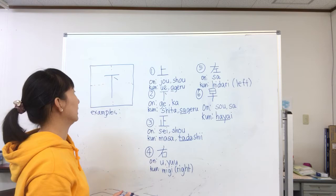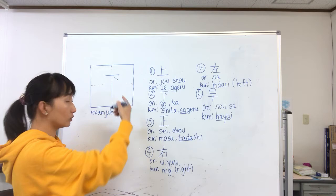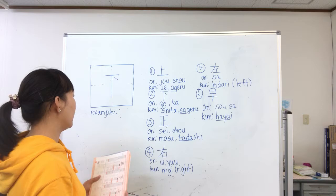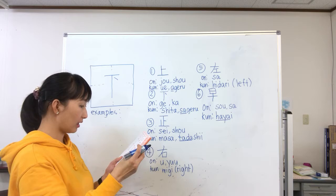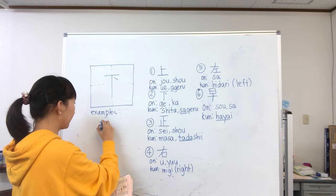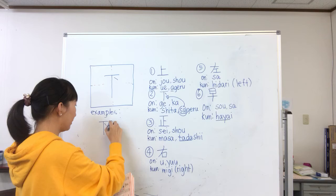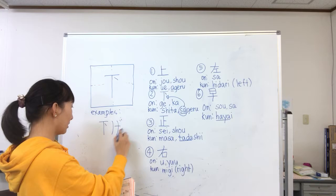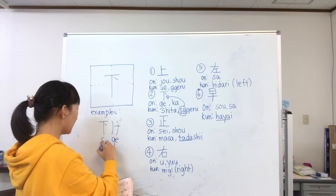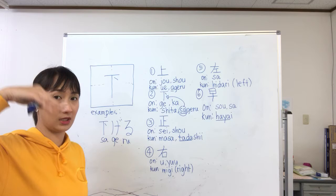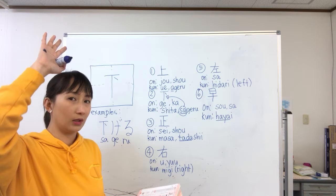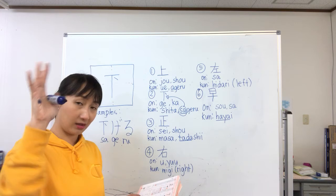This is the kanji for shita. If you see this kanji alone it means shita, which means down. The example I have is sagiru — only the 'sa' is written in this kanji, then geru in hiragana. Sagiru means to go down. If you want your students to put their hands down: te wo sagite kudasai — please put your hands down.